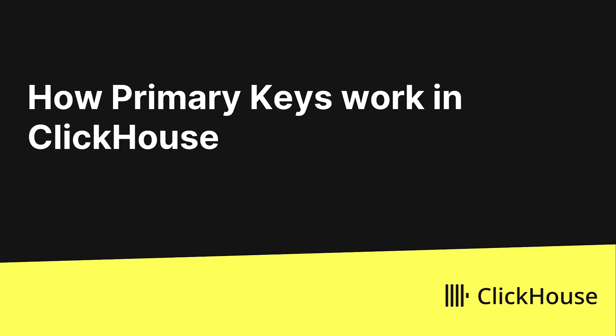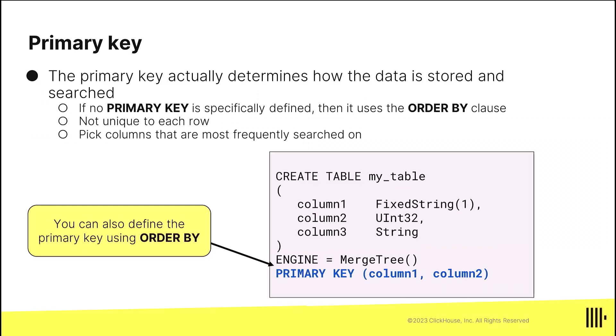Let's take a look at how primary keys work in ClickHouse. It's important to understand how they work because they're different than the primary keys you're used to in all those database systems where the primary key represents a unique row. In ClickHouse, the primary key represents the sort order of how your data is stored on the file system for your merge tree tables.